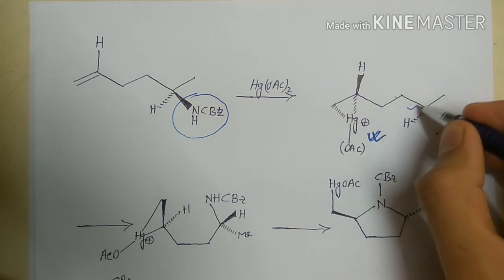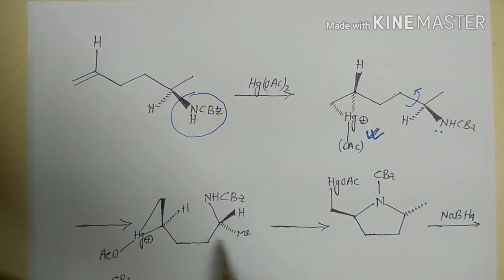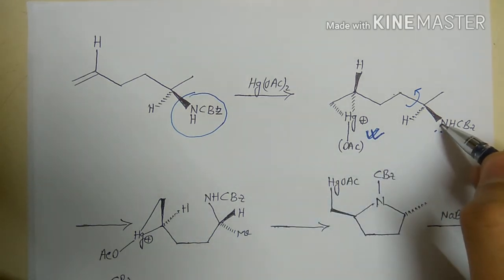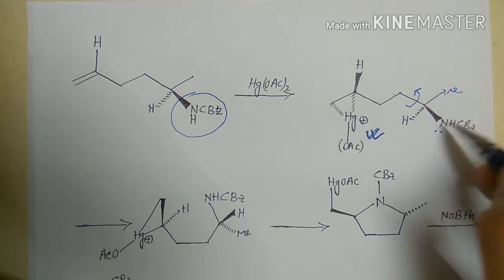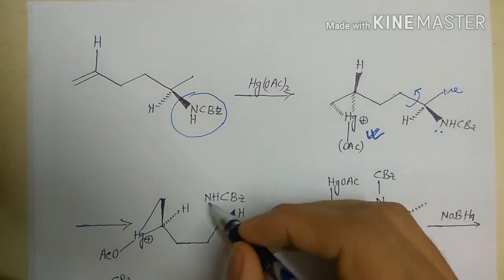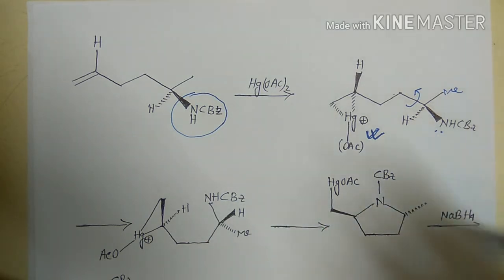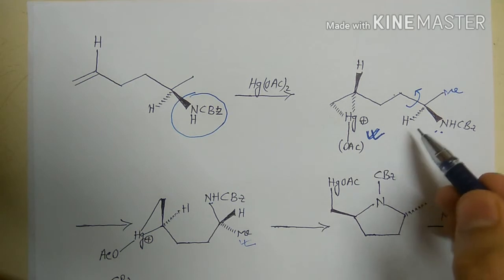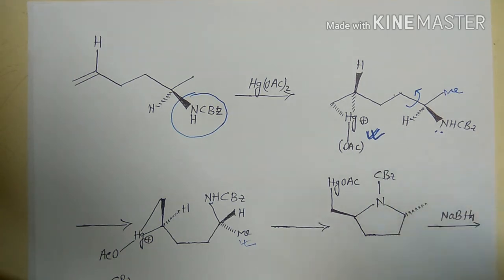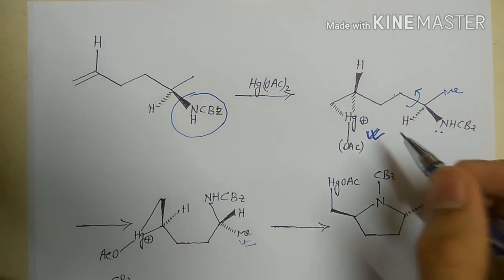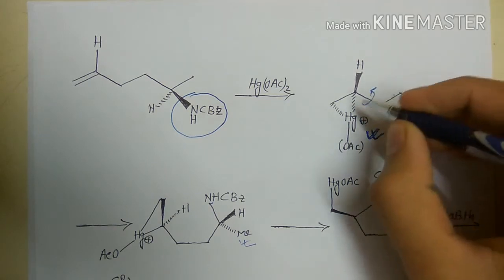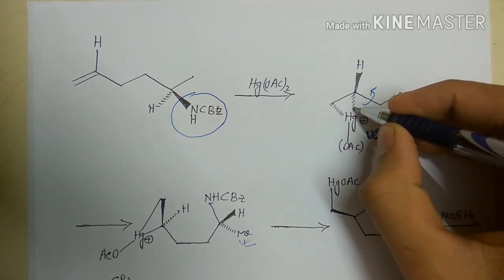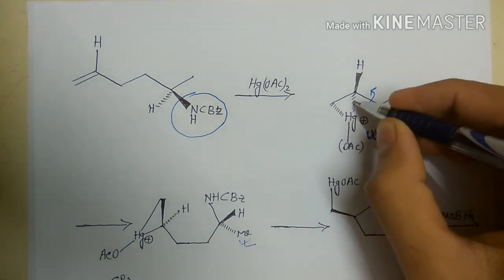To achieve proper alignment, we rotate the relevant bond. When we rotate this bond, the methyl group moves to below the plane and hydrogen comes above the plane. This rotation repositions the groups to set up the correct geometry for the intramolecular nucleophilic attack.